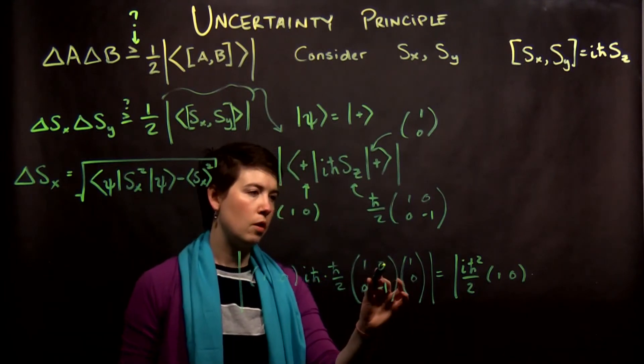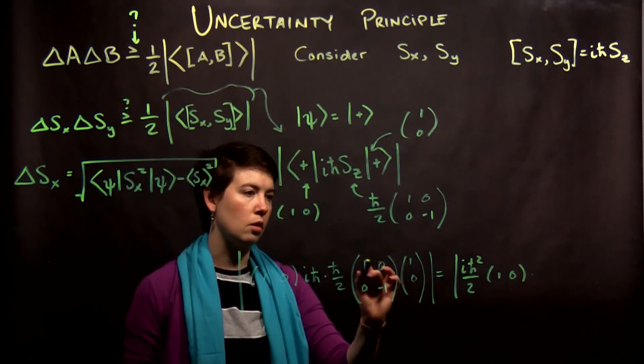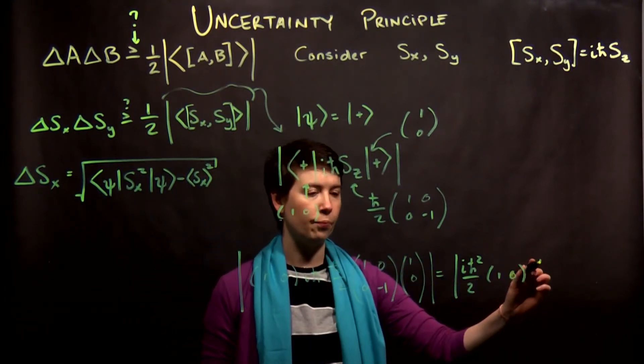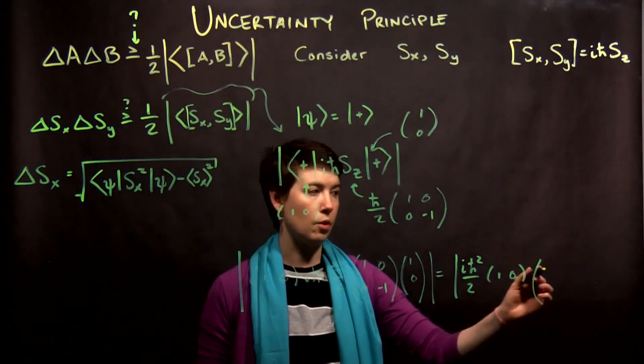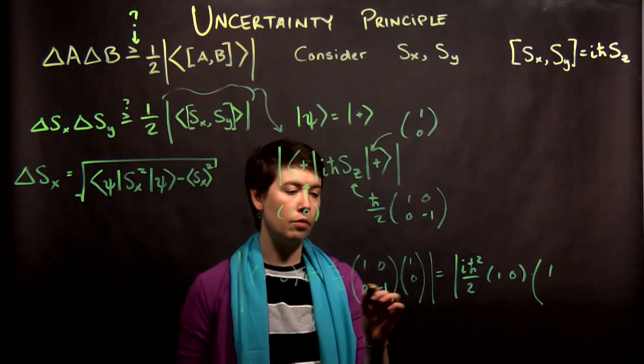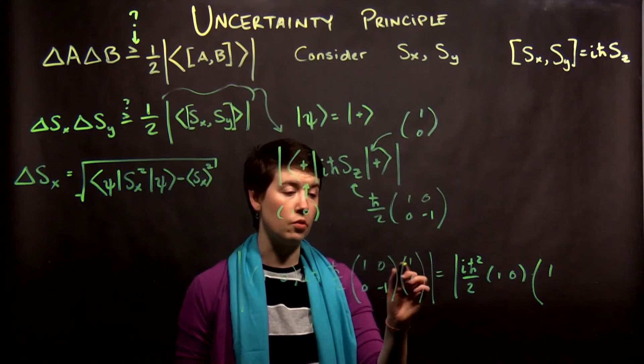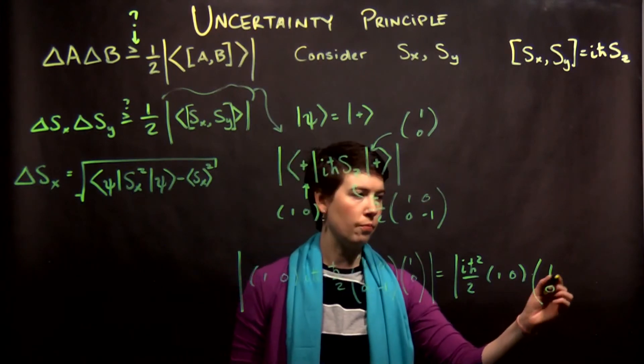So, the 1, 0, 1, 0, row times column, 1 times 1 is 1, plus 0 times 0 is 0, and then, over here, we have row times column, 0 times 1 is 0, negative 1 times 0 is 0.